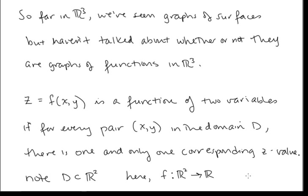Now let's talk about the definition of a function of two variables. z equals f(x, y) is a function of two variables if, for every pair (x, y) in the domain D, there is one and only one corresponding z value. This is very similar to the definition in 2D — for every input, this time a pair (x, y), you have a unique output, a unique real value.